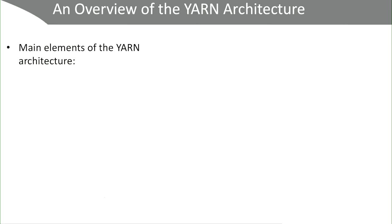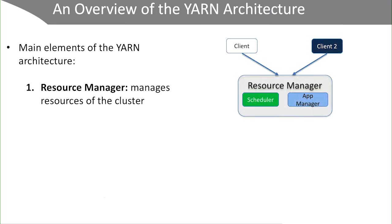How does Yarn work? There are four main elements in the Yarn architecture. The first is the Resource Manager, or RM, which manages the resources of the entire cluster. In the past, that was done by MapReduce, but here we separate it out to a specific daemon. The Resource Manager has two sub-functions: a scheduler and an app manager.